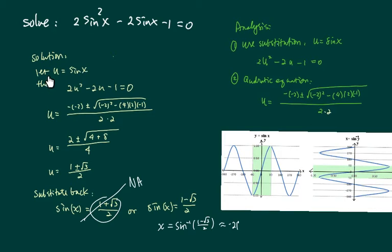Alright, so here's the solution. We're going to do a substitution and use the quadratic to solve. u is equal to 1 plus or minus square root of 3 divided by 2.